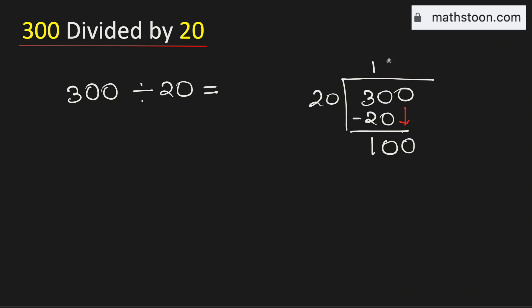Now we know that 5 times 20 is 100. Subtracting, we get 0. As there is no number to bring down here and we have obtained 0, we will stop. The value of 300 divided by 20 is equal to 15.